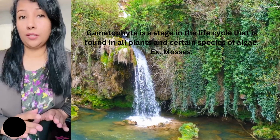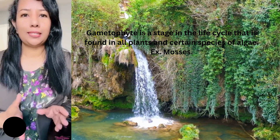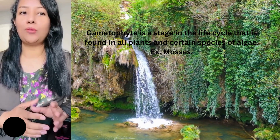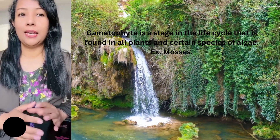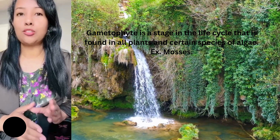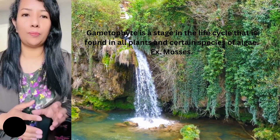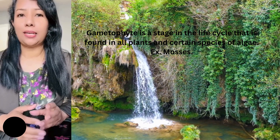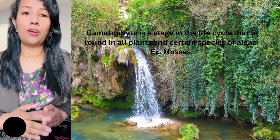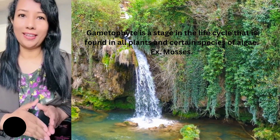What's the difference between gametophyte and sporophyte? Gametophyte is a stage of the life cycle that is found in all plants and certain species of algae, for example mosses. Sporophyte is a diploid spore-forming plant that emerges as a result of the fusion of diploid gametes, for example ferns.